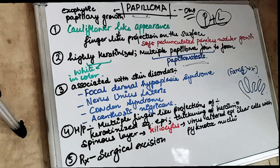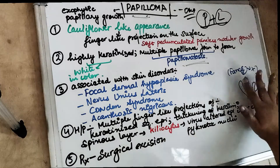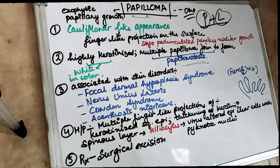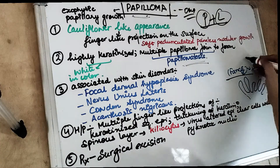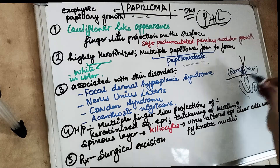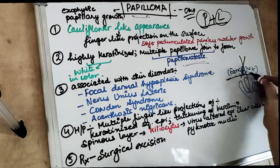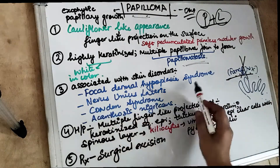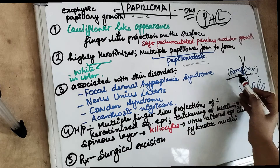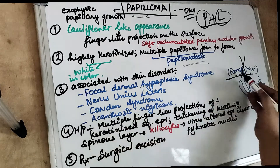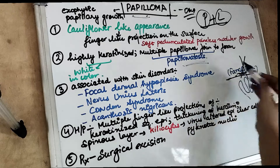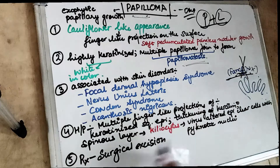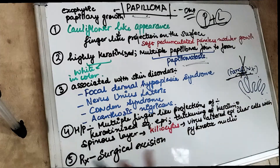Looking at the histopathological view, there are finger-like projections. To remember the associated syndromes, use the mnemonic FANC: F for focal dermal hypoplasia syndrome, A for acanthosis nigricans, N for nevus unius lateris, and C for Cowden's syndrome.